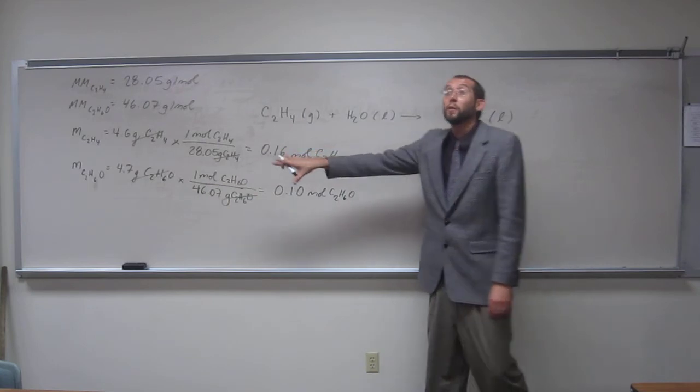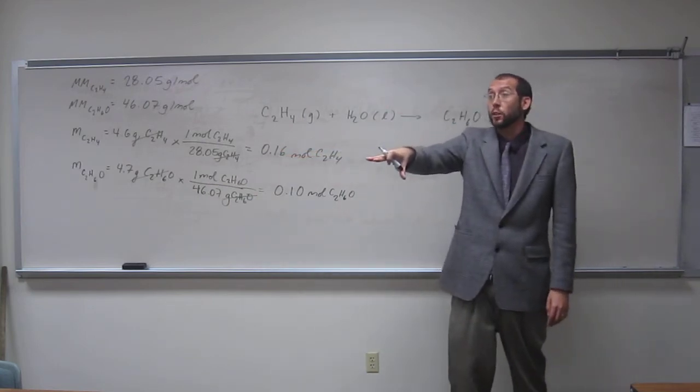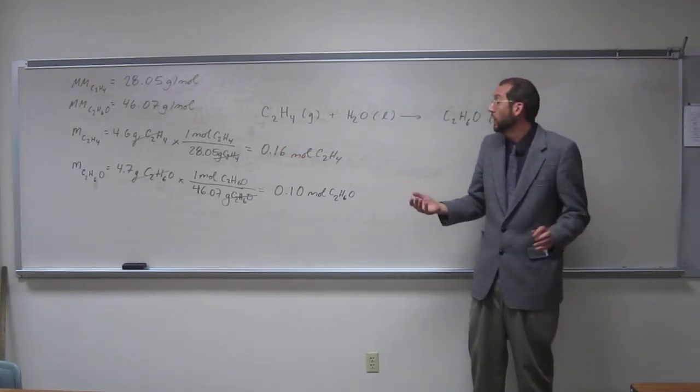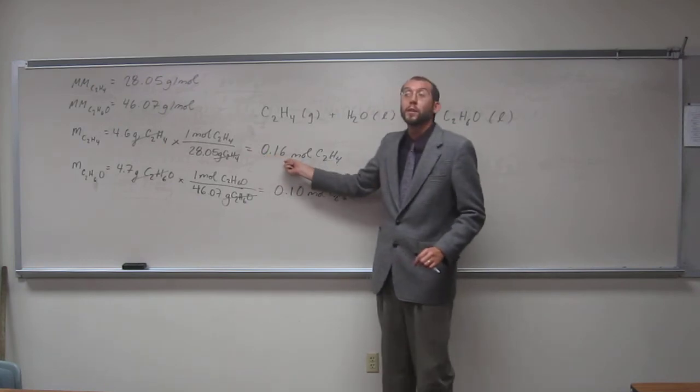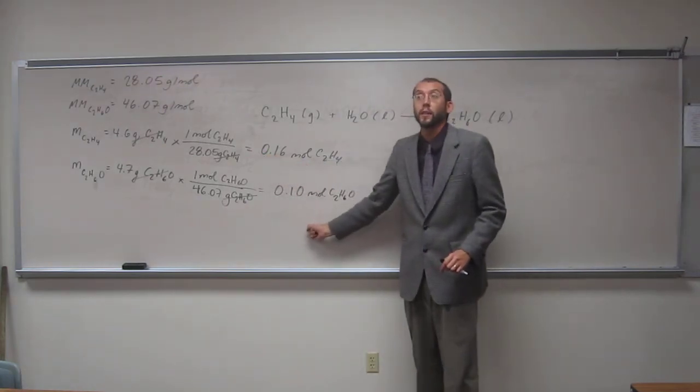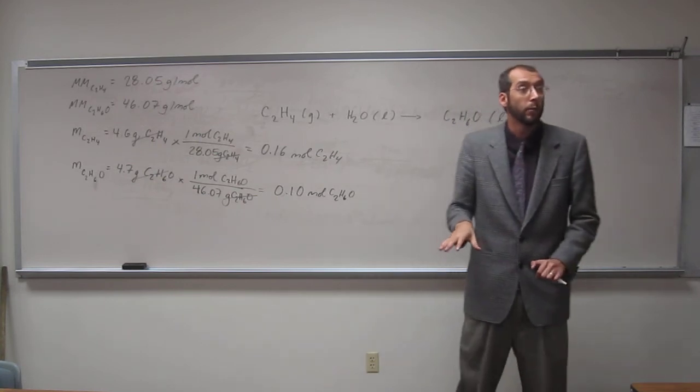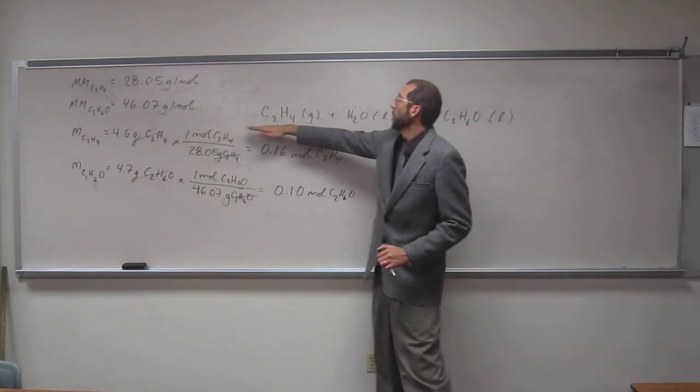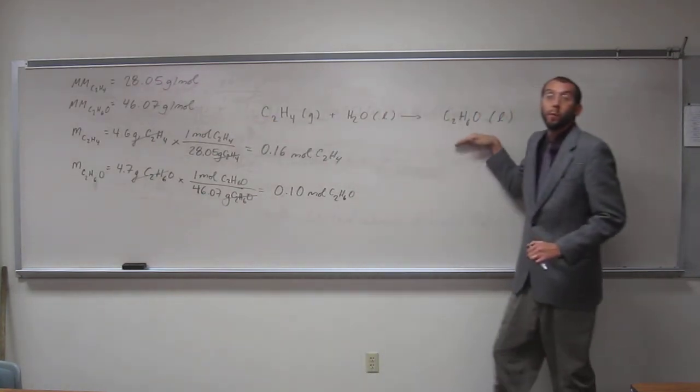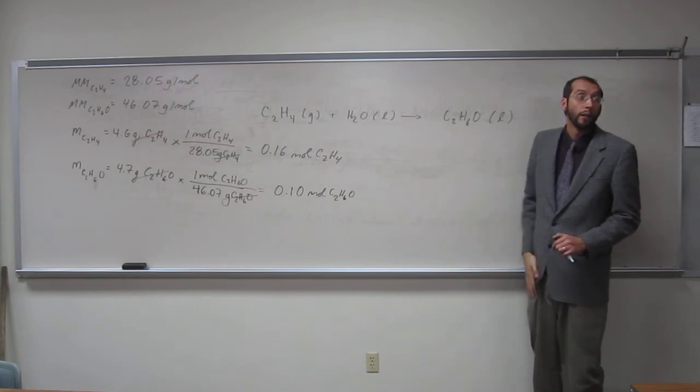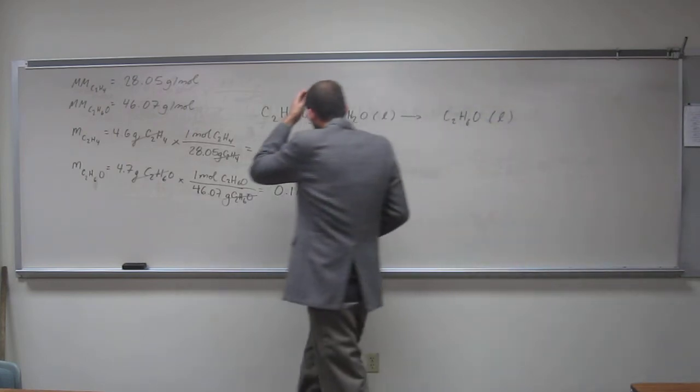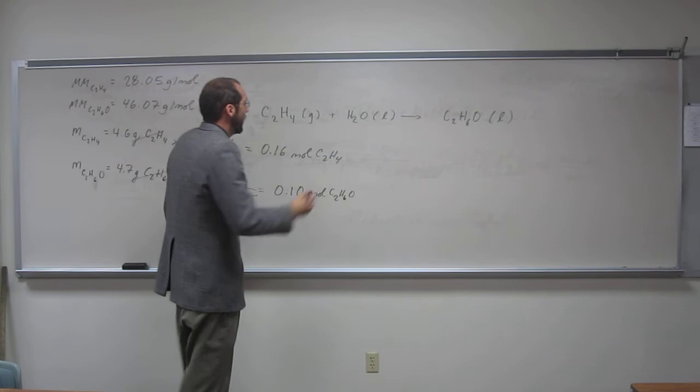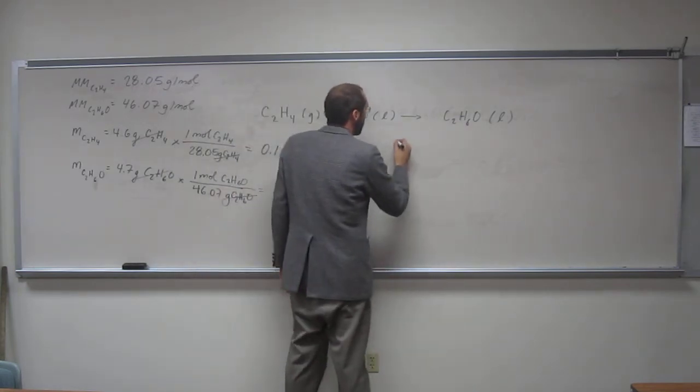If it were a maximum yield reaction, a 100% yield, you would have gotten 0.16 moles of ethanol out of this thing. Does everybody understand where we're going with that? Because we have a one to one mole ratio here. So, let's calculate the percent yield.